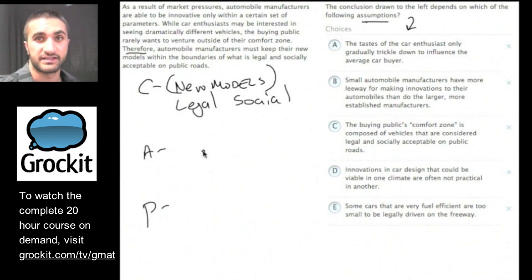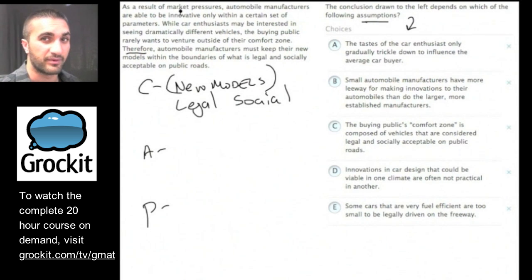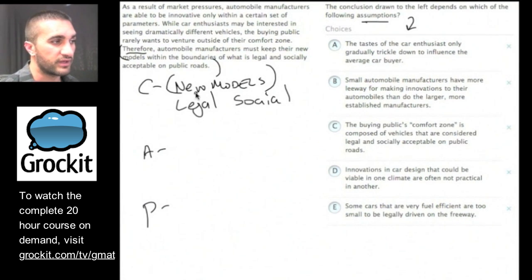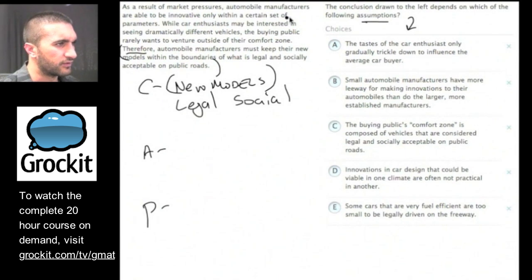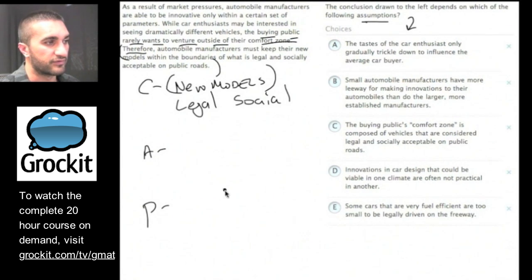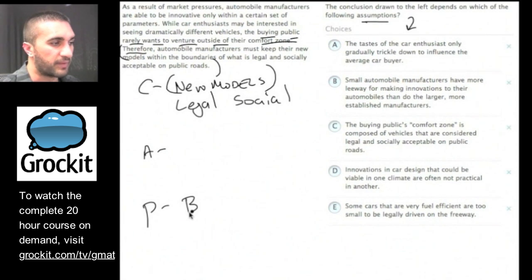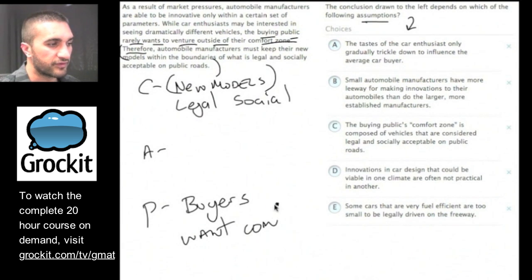Now why is this the case? The premise tells us why. As a result of market pressures, automobile manufacturers are able to innovate only within certain parameters. While car enthusiasts may want dramatically different vehicles, the buying public rarely wants to venture outside their comfort zone. That's why automobile manufacturers must keep their new models within legal and socially acceptable bounds — because buyers, not car enthusiasts, want their comfort zone.